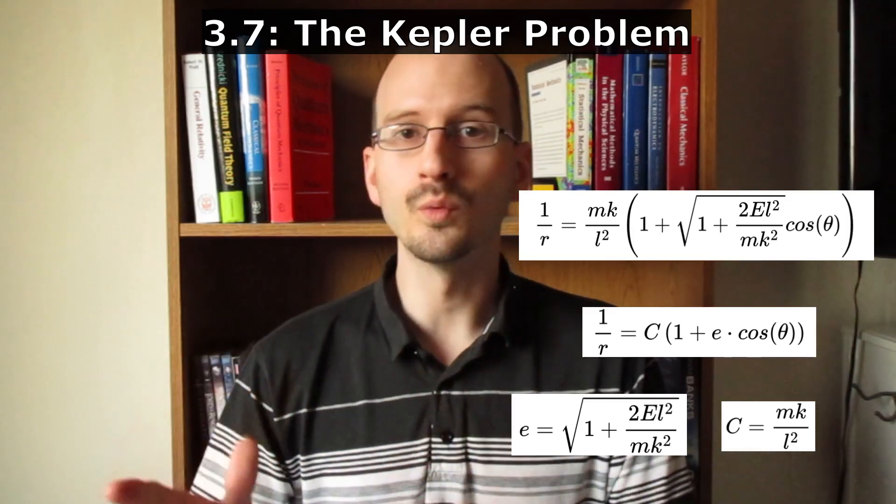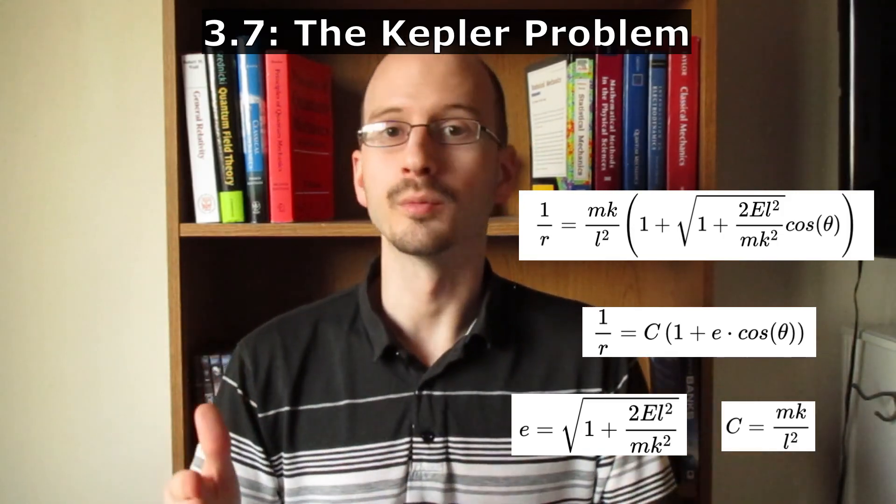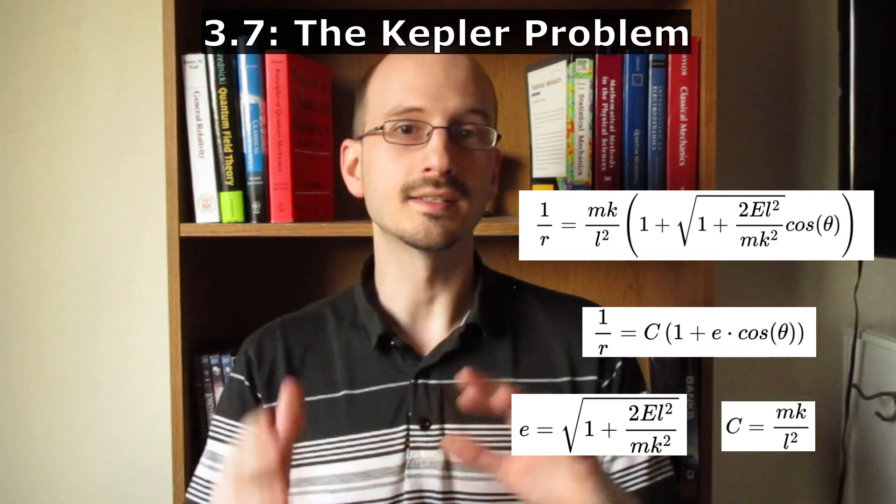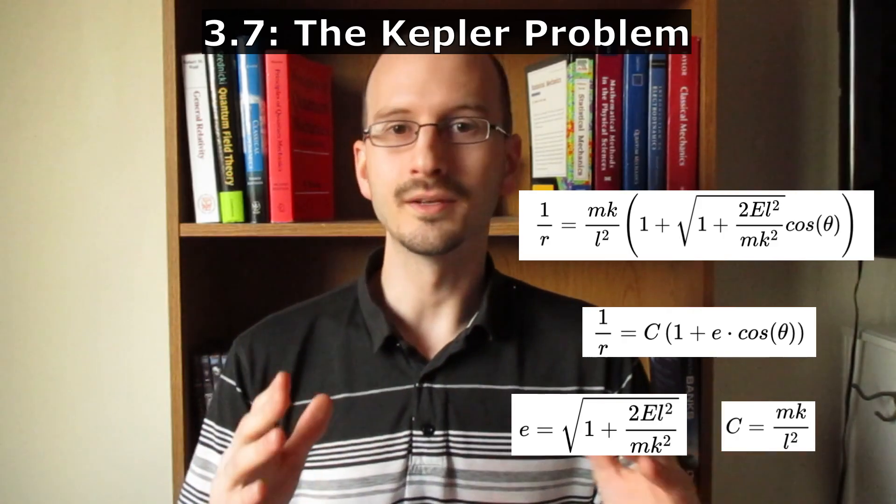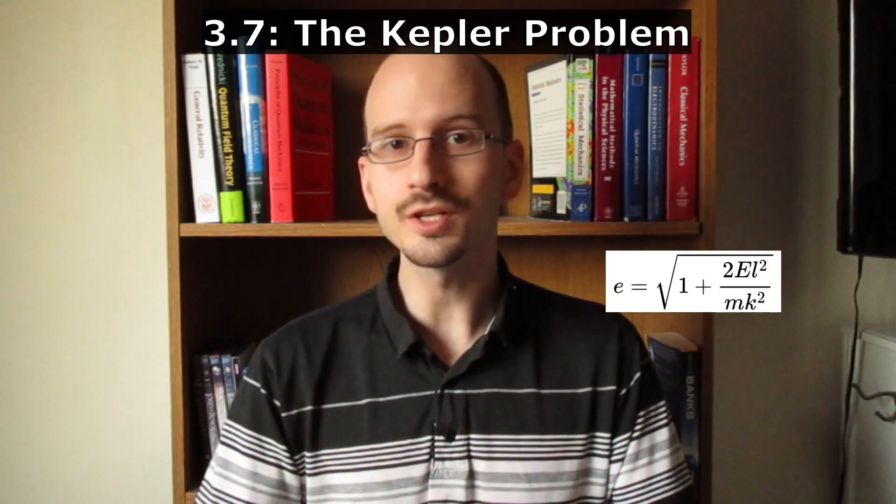If the eccentricity is greater than one, the orbit is a hyperbola. If the eccentricity is equal to one, the orbit is a parabola. If the eccentricity is less than one, the orbit is an ellipse, and if the eccentricity is equal to zero, the orbit is a circle. From the eccentricity equation, we can derive that the energy of a circular orbit is equal to this.